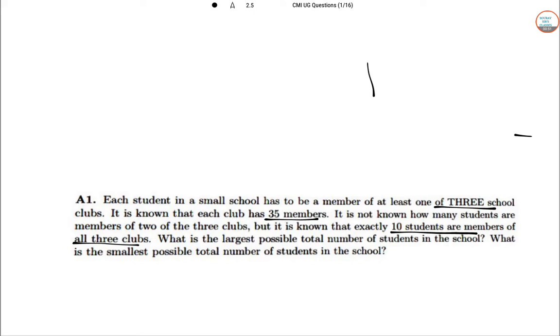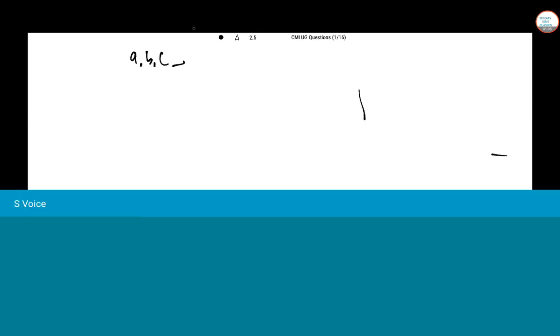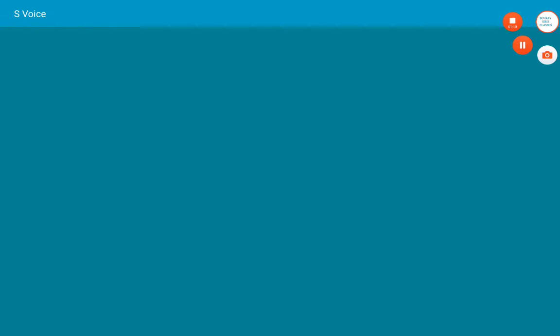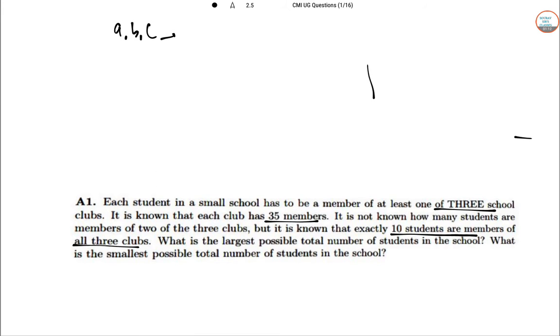So let A, B, C are the number of students, the number of exactly members of any one of these clubs X, Y, Z. So let A, B, C means exactly one of the clubs, exactly one.